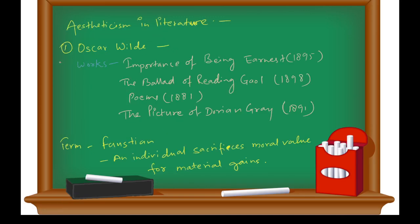Aestheticism in literature - the first writer is Oscar Wilde. Oscar Wilde wrote many works: The Importance of Being Earnest in 1895, The Ballad of Reading Gaol in 1898, Poems in 1881, and The Picture of Dorian Gray published in 1891. This is a very important novel related to aestheticism.